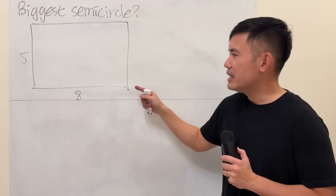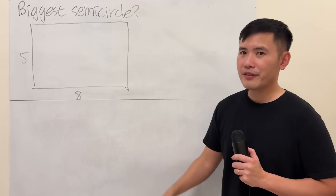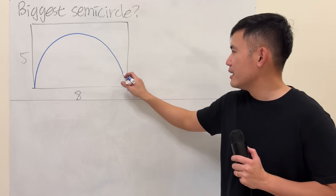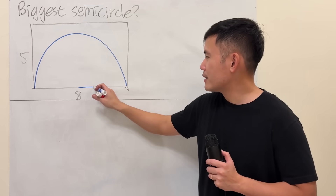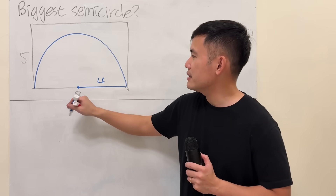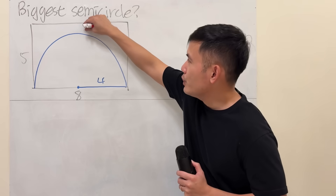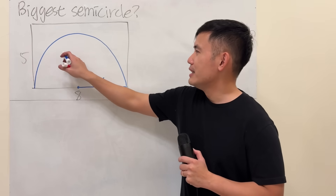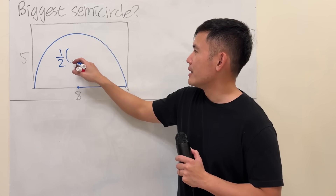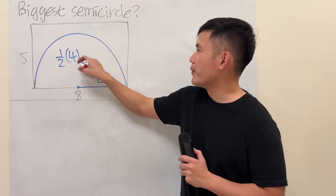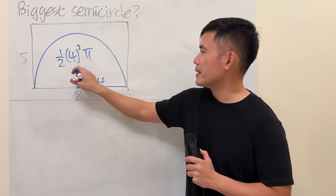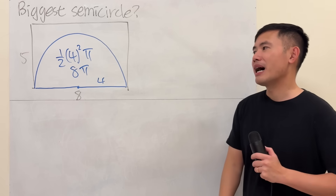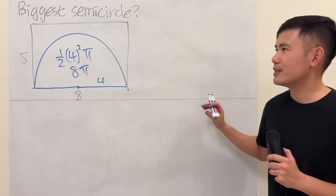If you use this as the base for the semicircle, which is going to be the diameter of the semicircle, you can draw something like this. Since it's just the diameter, that will be 4 for the radius, and because this right here is 5, we do have a little bit of space. If you compute the area of this, it's half times pi r squared. r is 4, so that's 16 divided by 2, which is 8π. This is only 8π.